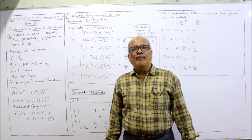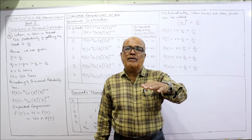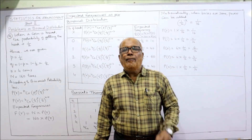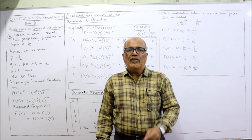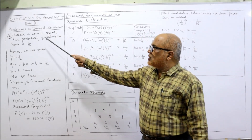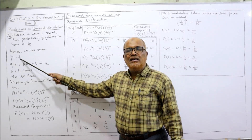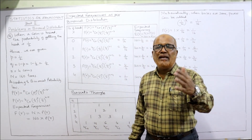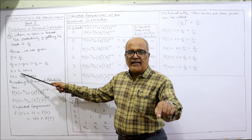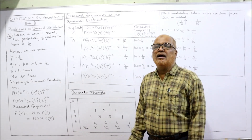For the binomial probability law, the main parameters are n and p. Here n means how many coins are tossed at a time — four coins, so n = 4. p is the probability of getting a head: p = 1/2. Therefore q = 1 − p = 1 − 1/2 = 1/2. And capital N, the number of times the experiment occurred, is 160.